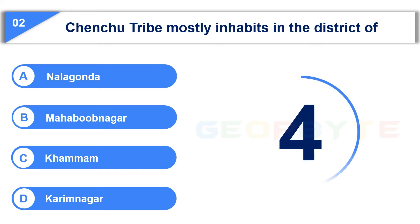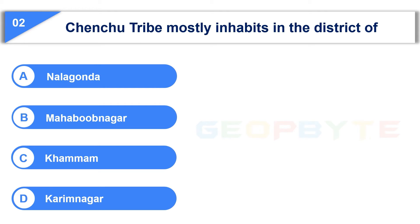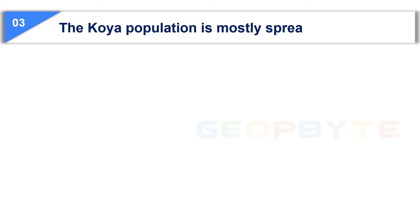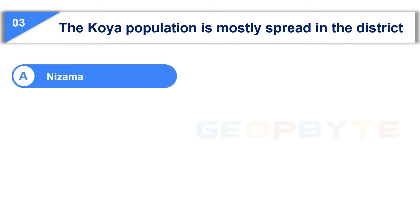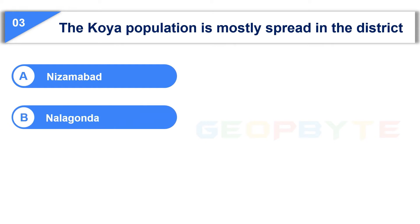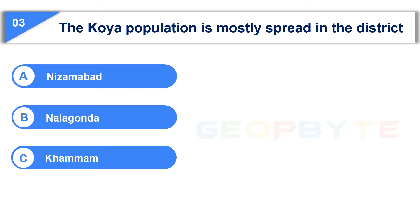Your time is up and the correct answer is Option B: Mahbubnagar. The third question is: The Koya population is mostly spread in the district of — Option A: Nizamabad, Option B: Nalgonda, Option C: Khammam.